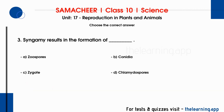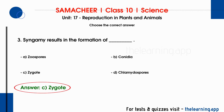Third question: syngamy results in the formation of DASH. Options are A. Zoospores, B. Conidia, C. Zygote, D. Chlamydospores. The correct answer is option C, Zygote.